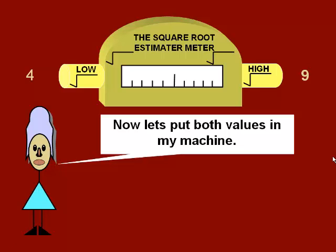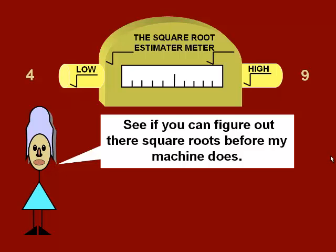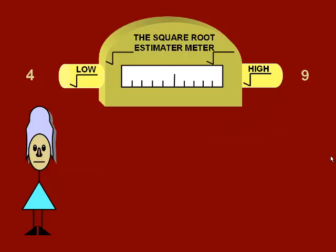Now that we know both our lower and upper limits for perfect squares, let's put these perfect square values into the machine and see what happens.